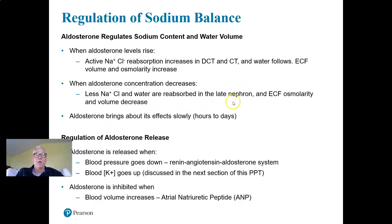Aldosterone is released when blood pressure goes down via the renin-angiotensin-aldosterone system — an excellent chance to review that system from chapters 16 and 19. When blood potassium goes up, aldosterone is also released, because the cortex cells of the adrenal gland directly respond to changes in potassium concentration. We'll bring that up again when we discuss potassium management.